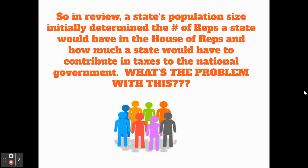Reviewing the setup of how the government under the Constitution was going to work: a state's population size was going to be important for two different reasons. The first thing that a state's population size would determine is the number of representatives an individual state would get in the House of Representatives — the larger the population, the more reps. The second thing determined by population is how much that state would have to give in tax money to the federal government; states with larger populations would have to give more in taxes.